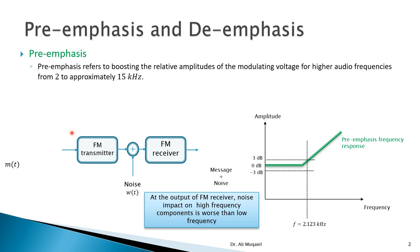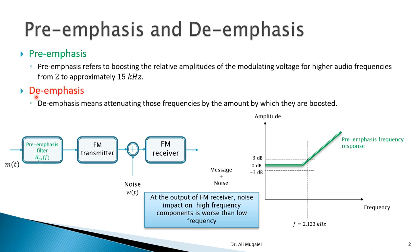At the receiver side, the pre-emphasis block is shown in the diagram before the FM transmitter. If we use non-constant amplitude, the message will be distorted, so to avoid this we do the opposite at the receiver side — a process called de-emphasis. De-emphasis means attenuation — the opposite of boosting — of the frequencies that were already boosted, and the transfer function looks like the inverse of the pre-emphasis filter.